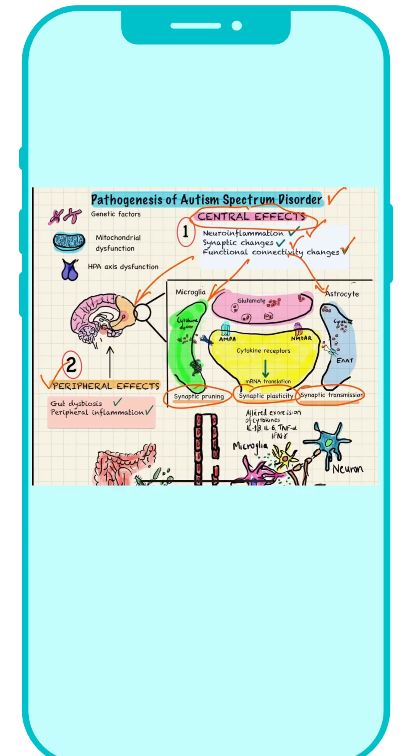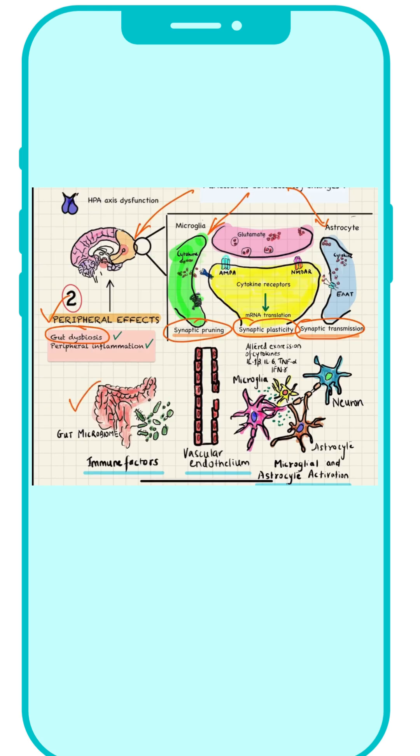Then, the peripheral effects include gut dysbiosis. The gut microbiome can be significantly affected. This includes immune factors, and overall, the microglial and astrocyte activation feeds into release of cytokines, which itself can affect the periphery and the brain.